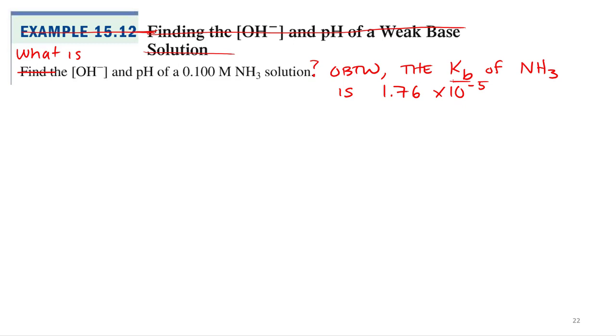That's how you know it's going to be a weak base. Conceptually, that's a nitrogen-containing molecule, so that's probably a weak base, but the KB seals the deal. Ka is weak acid, KB is weak base. Strong acids and strong bases do not have equilibrium constants because they don't set up equilibrium.